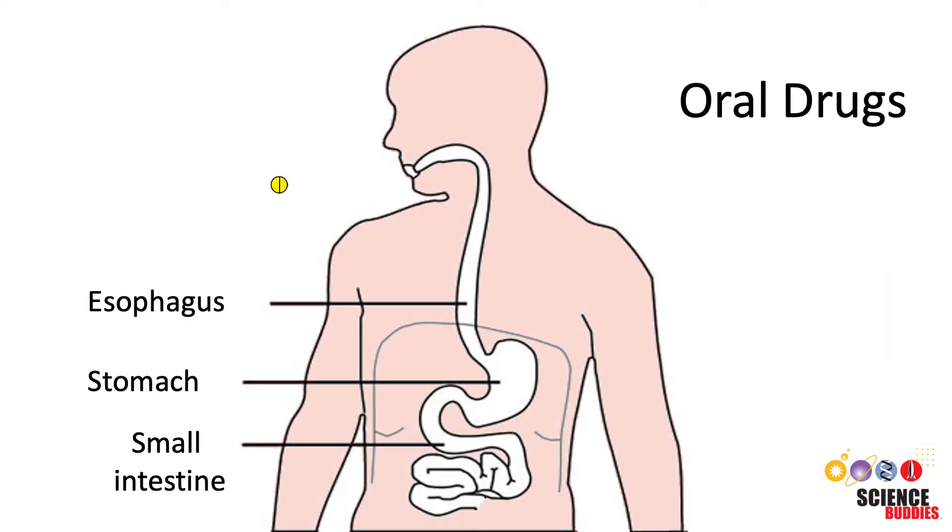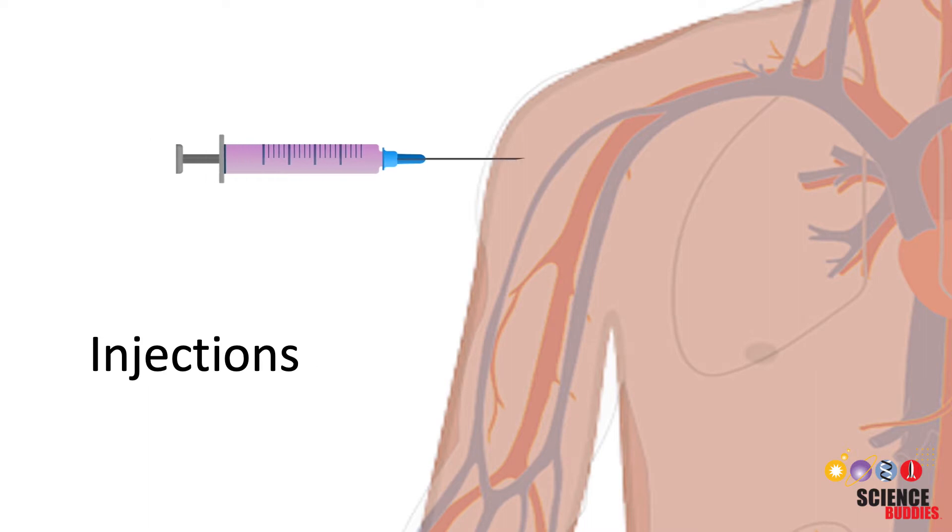Oral drugs are taken by mouth and travel through the digestive system, where they dissolve and get absorbed into the bloodstream. Injections or shots are delivered into a person's body using a needle and a syringe, which allows for rapid absorption of the active ingredients into the bloodstream.